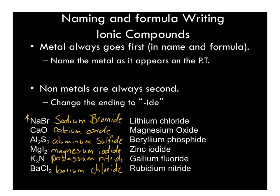The next examples are calcium oxide, aluminum sulfide, magnesium iodide, potassium nitride, and barium chloride. If you notice, aluminum sulfide has a 2 and a 3 involved, but that doesn't really matter when we're just naming — we're just looking at the aluminum and the sulfide.